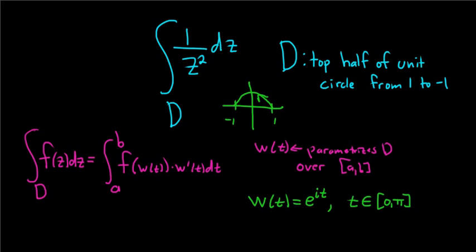So now we have to work out this formula. So w prime is pretty easy. The derivative of e to the x is e to the x. Here you get e to the i t times the derivative of the inside. So the inside function is i t, so its derivative is i. So this is equal to i e to the i t.